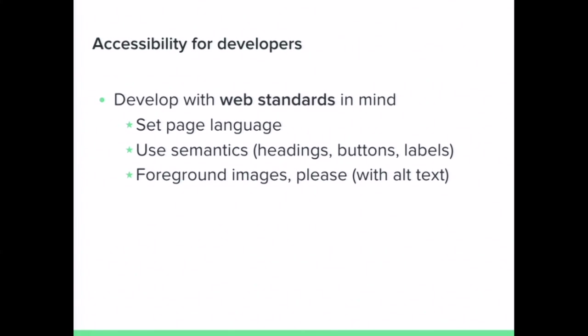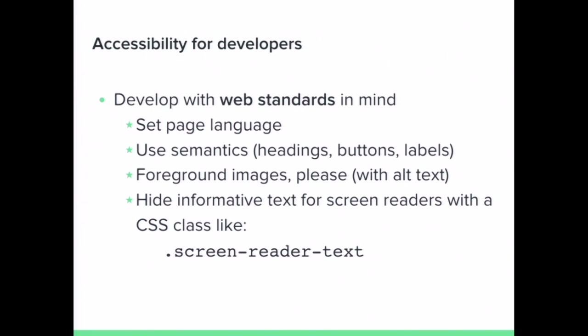Use foreground images and give them alt text. With WordPress, there's a built-in CSS class that hides informative text from visual users but gets read out for screen reader users — it's called screen-reader-text, built in for four or five years now. Visual users have the context of what's on screen, so a 'read more' link is fine for someone who can see it's associated with a headline. But if you're a screen reader user going through links mode, you just get a bunch of 'read more' links with no context. You can add a span with class screen-reader-text containing the post title so it gets read out in context.